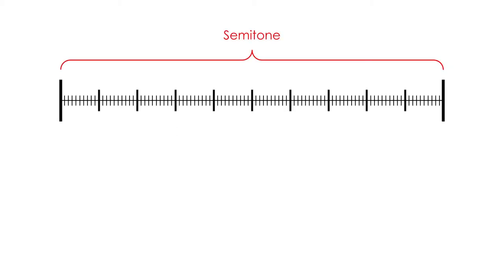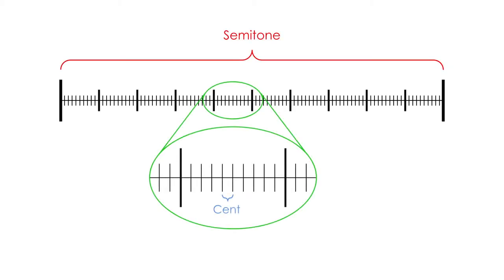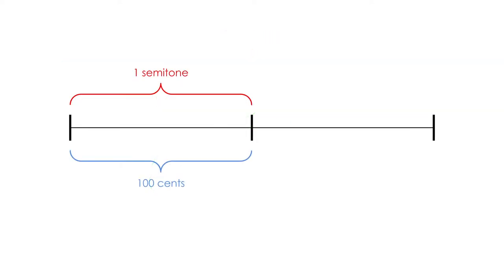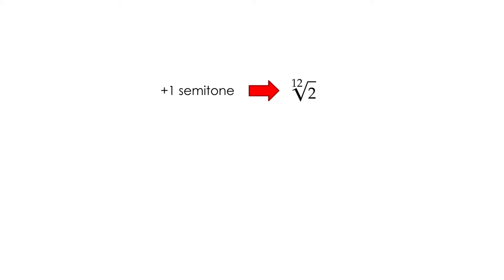So in equal temperament, to go up from a note to the next semitone, you have to multiply the frequency of the note by the 12th root of 2. And to go down from a note to the previous semitone, you have to divide the frequency of the note by the 12th root of 2. Another unit used to measure note intervals are the cents, which are equal to a hundredth of a semitone. So 100 cents is a semitone, and 200 cents is two semitones.